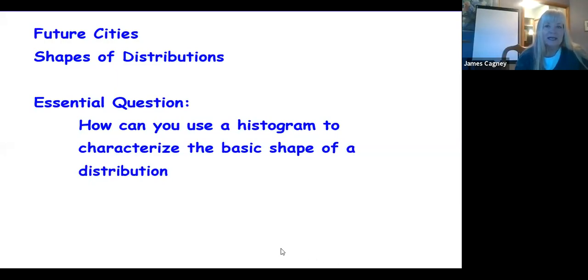We're talking about future cities, shapes of distributions. The central question is: how can you use a histogram to characterize the basic shape of a distribution? I talked about how to make a histogram in an earlier video, and hopefully you remembered how to do that. We're going to revisit that today too. Pause the video if I get ahead of you, copy down what you need, and then go ahead and go on.